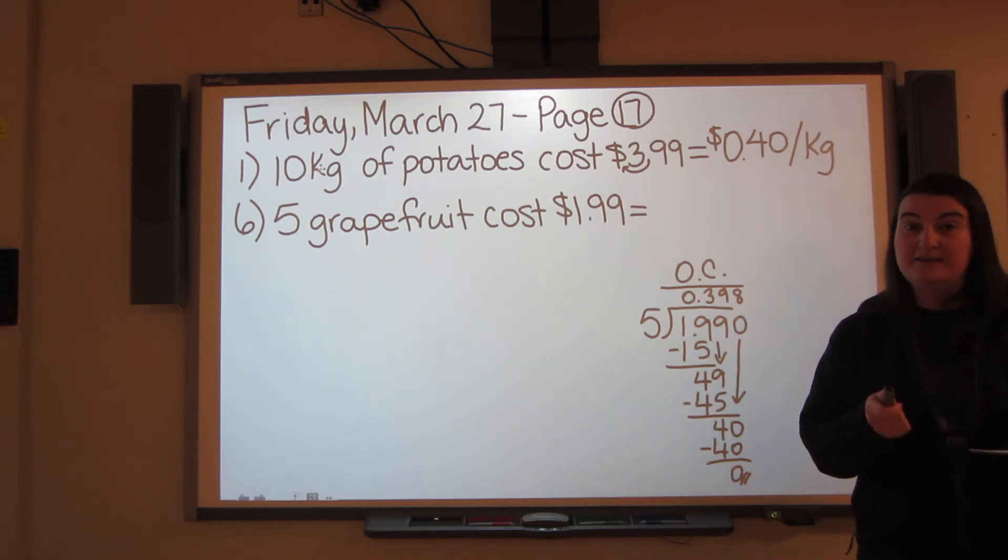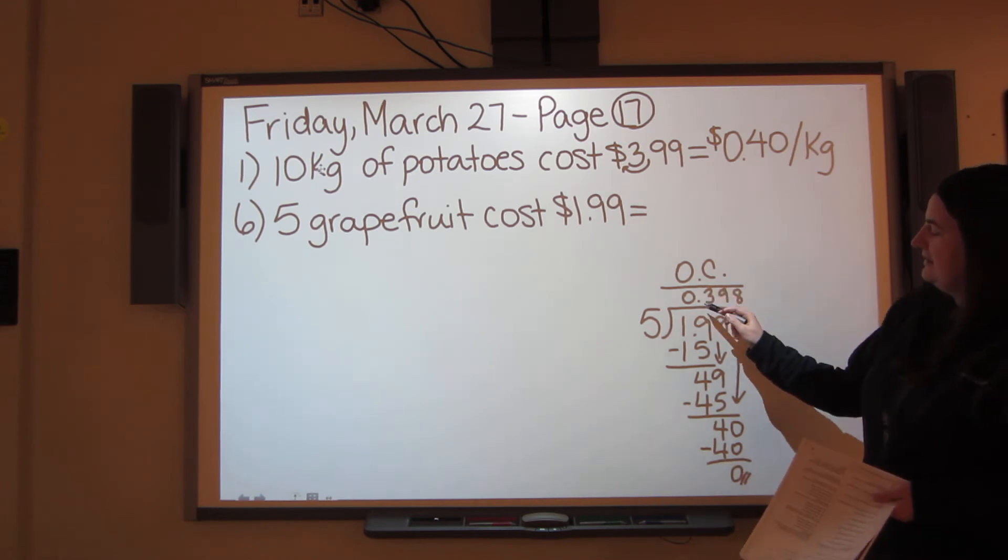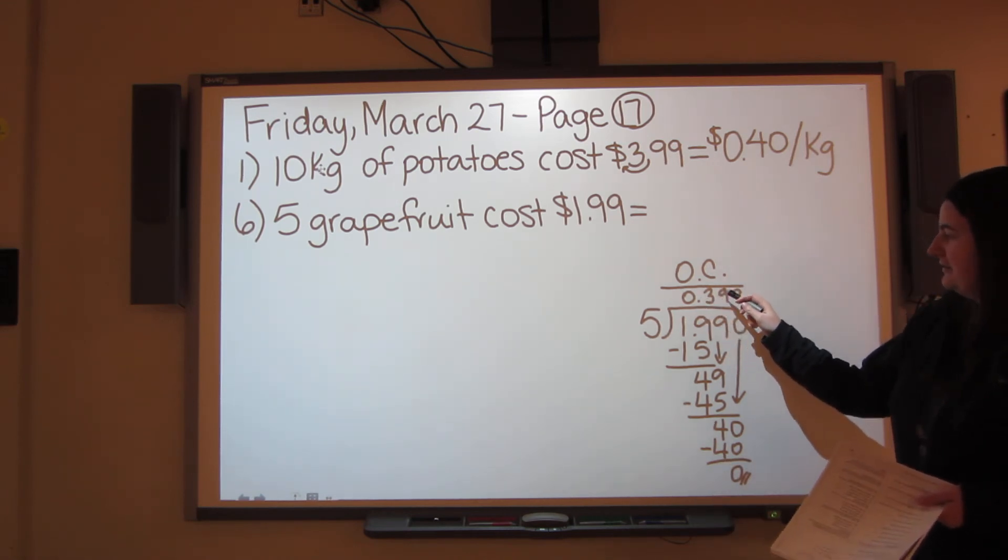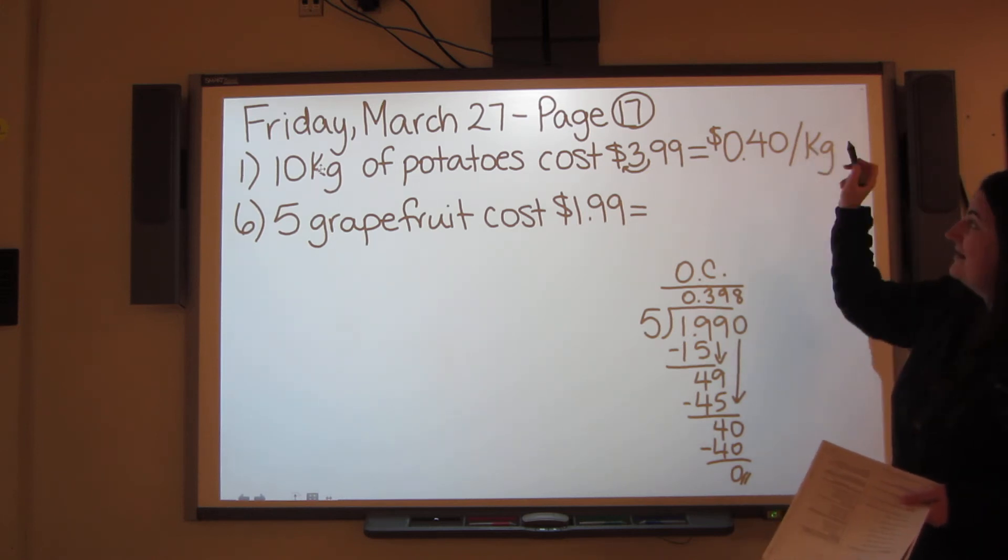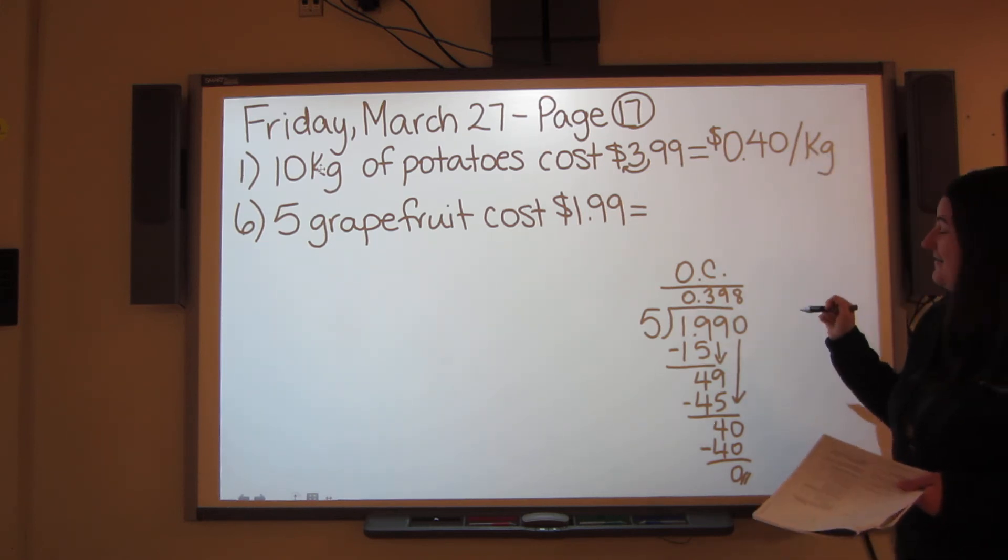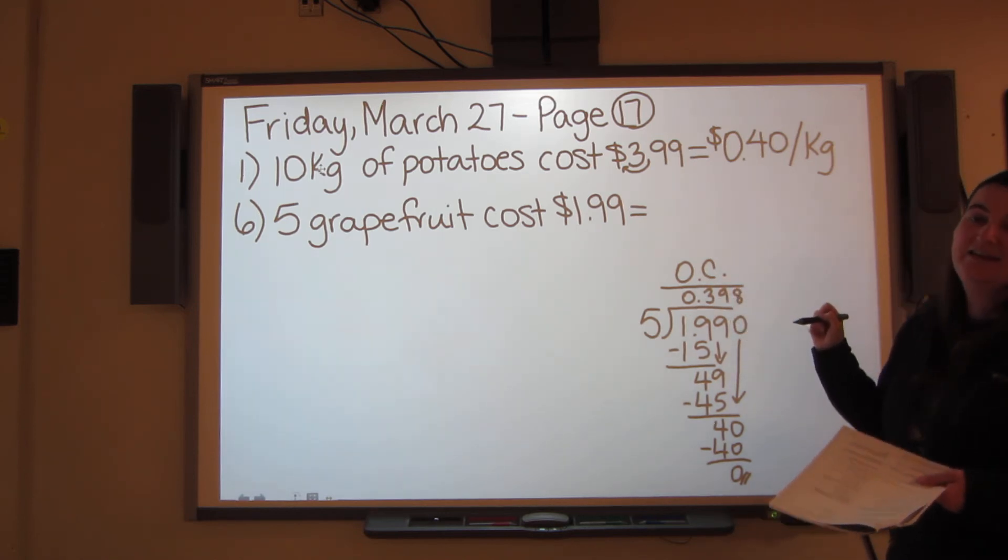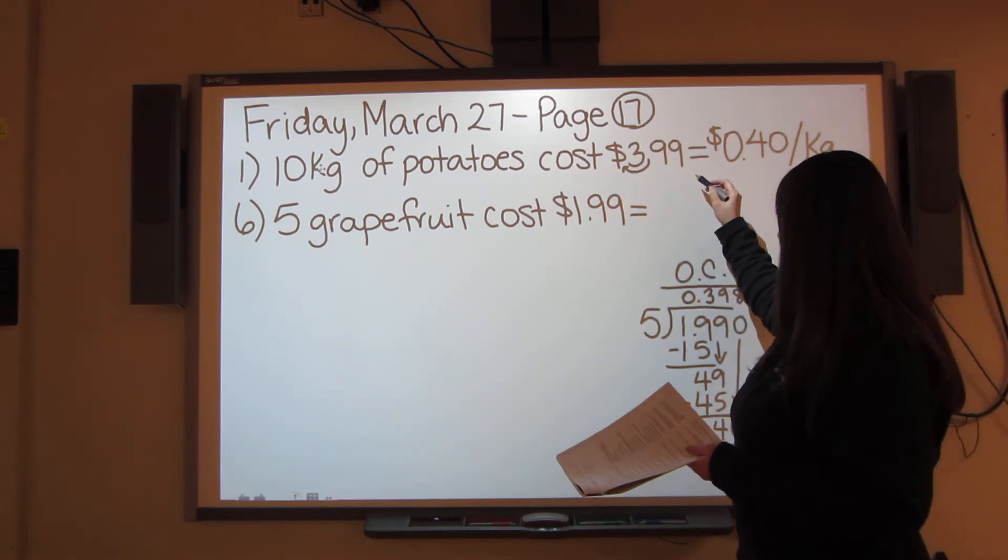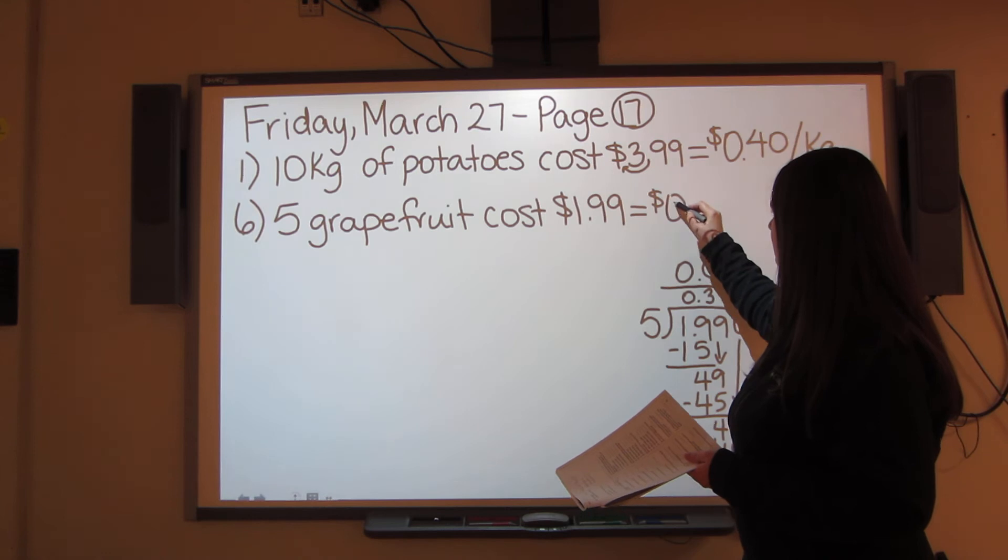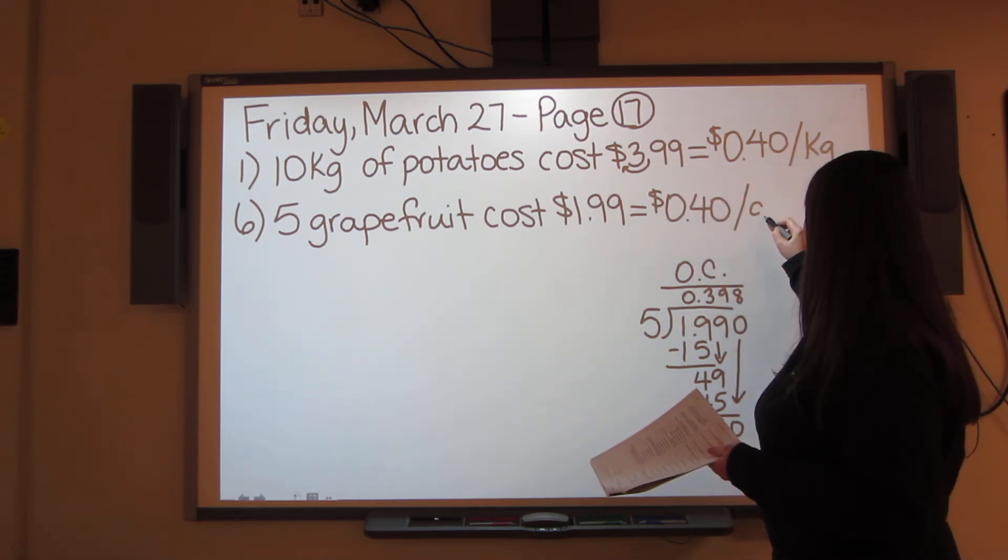Now remember, rounding. Again, with the rounding. So you're looking and you've got 0.39 cents, and then it keeps going with an 8. So just like we did up on number 1, you're going to round. You're going to take that 8, which changes the 9 into a 0, which then changes the 3 into a 4. So it's actually 40 cents, again, per grapefruit.